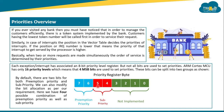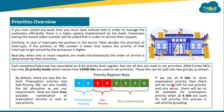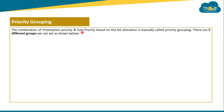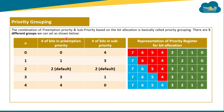If we use all four bits to store preemption priority, there will be no bit left for sub priority, and vice versa. This process of allocating bits between preemption priority and sub priority is called priority grouping. The ARM Cortex MCU supports five different priority groups based on this bit allocation.